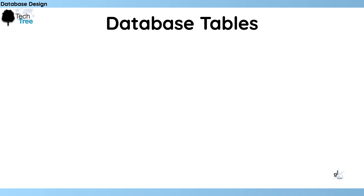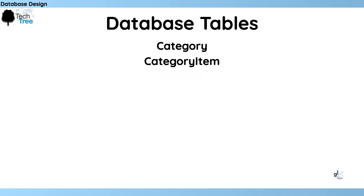Let's look at our first type of tables — our custom tables. The category table will store metadata about a group of category items. For example, in the context of our application, data for a particular category stored as a row in the category table can represent a course entitled C-Sharp for Beginners, or Advanced C-Sharp, or SQL Server for Beginners, etc. The category item table stores one or more items related to a particular category. For example, the C-Sharp for Beginners course category may contain several category items, like a tutorial entitled Introduction to C-Sharp, C-Sharp Data Types, or C-Sharp Variables, etc. The category table has a one-to-many relationship with the category item table.